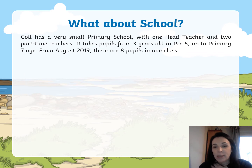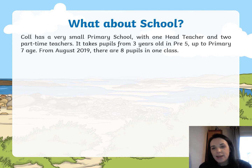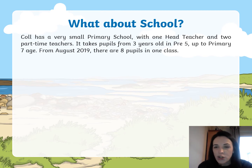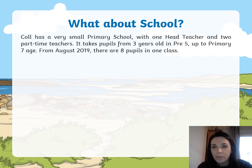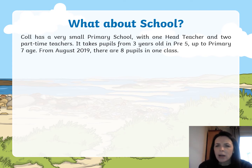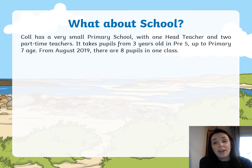It has a very small primary school — one headteacher, and two part-time teachers. A part-time teacher is someone who doesn't work every single day of the week. It takes pupils from three years old up to primary seven age. In our primary school we take children up to age 11, but this one only goes up to age seven — so up until the end of year two. You would go to the primary school, but if you're any older, you wouldn't go to the primary school. I wonder where you'd go.